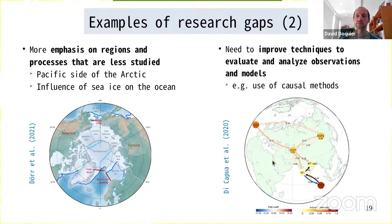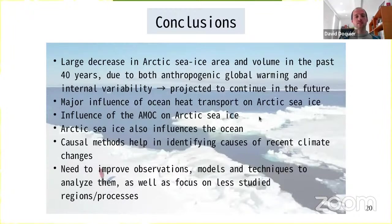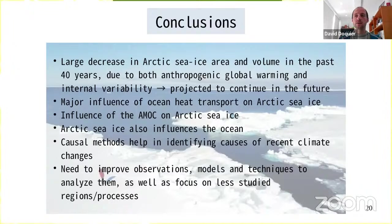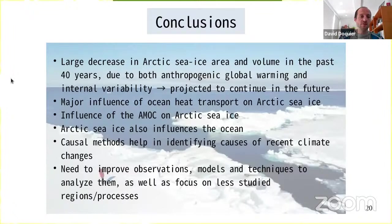To summarize: there is a large decrease of Arctic sea ice in past years due to both anthropogenic global warming and natural variability. There is a major influence of oceanic transport on sea ice in the Arctic, and also an influence of the AMOC on Arctic sea ice. Conversely, Arctic sea ice has an important influence on the ocean. There is a need to improve observations, models, and techniques to analyze both, and also a focus on less-studied regions and processes. Thank you very much for your attention, and I'm pleased to take your questions.